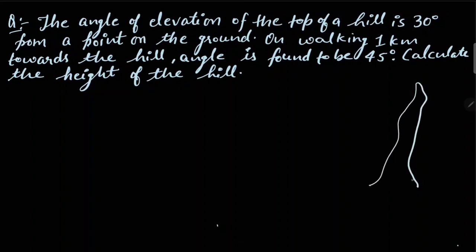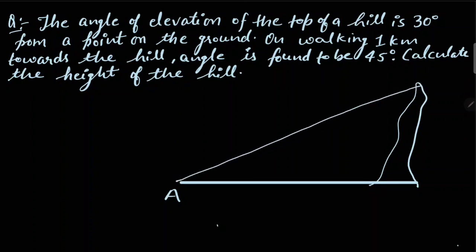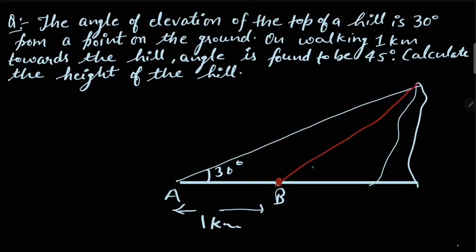Consider this is a hill. From a point on the ground — consider this point is A — the angle of elevation to the top of the hill is 30 degrees. After walking one kilometer towards the hill, we reach point B. From point B, the angle of elevation becomes 45 degrees. We have to calculate the height of this hill.